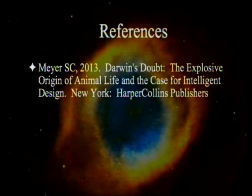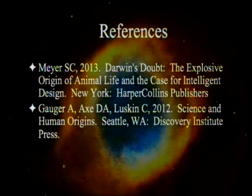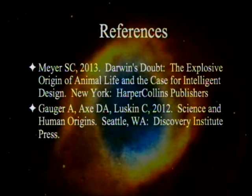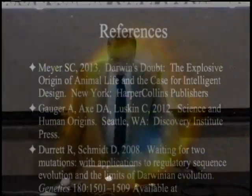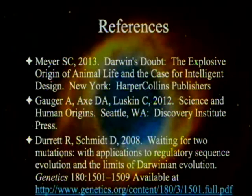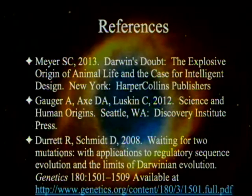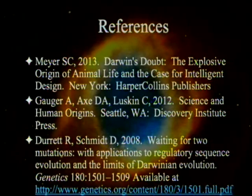The references: a book called Darwin's Doubt by Steve Meyer has a lot of references and is well organized. Before that there's a book by Gage, Axe, and Luskin — Science and Human Origins — that again has a lot of references. In the email I put a web address, but apparently it is now defunct. And there's one special article by Durden Schmidt in 2008, printed in Genetics and available on the web.